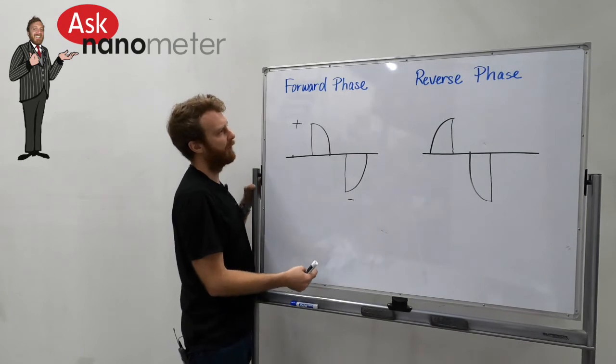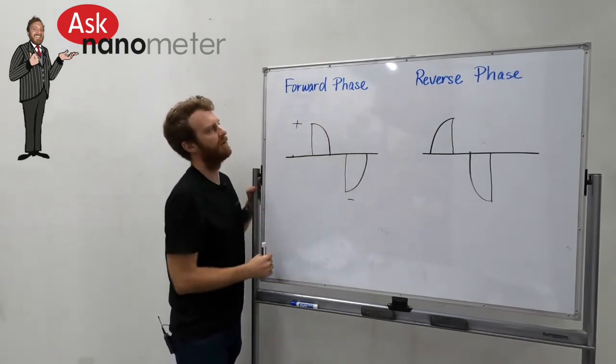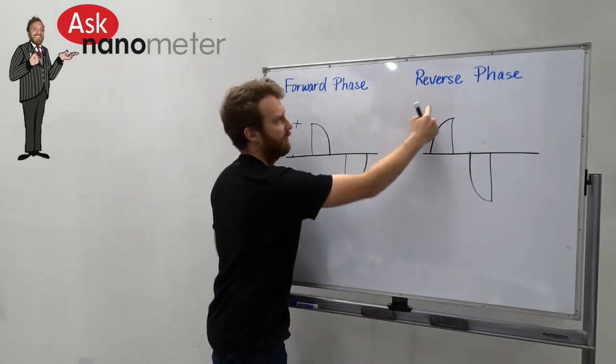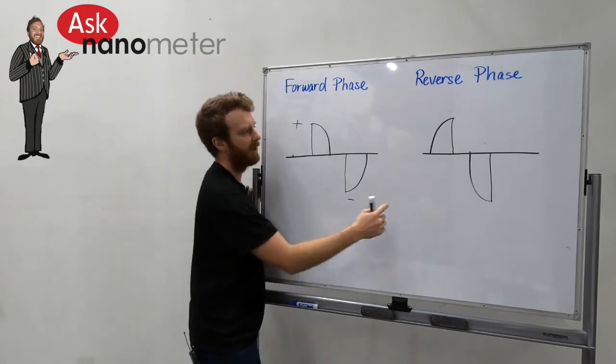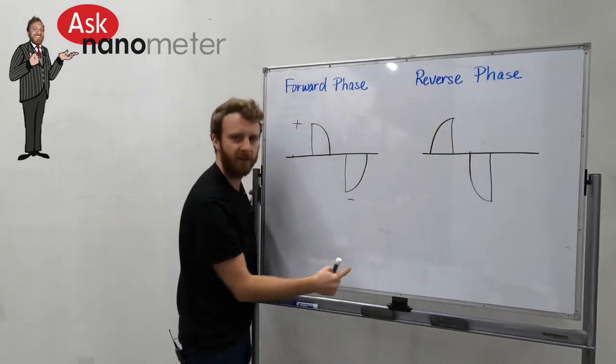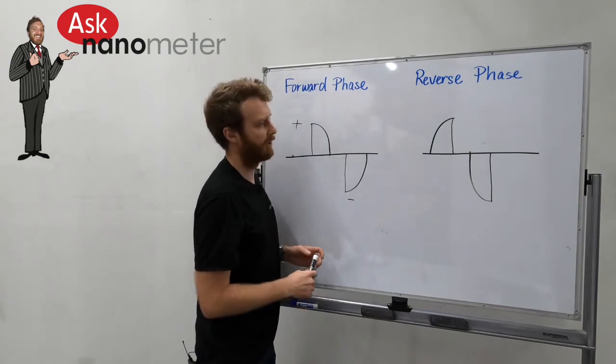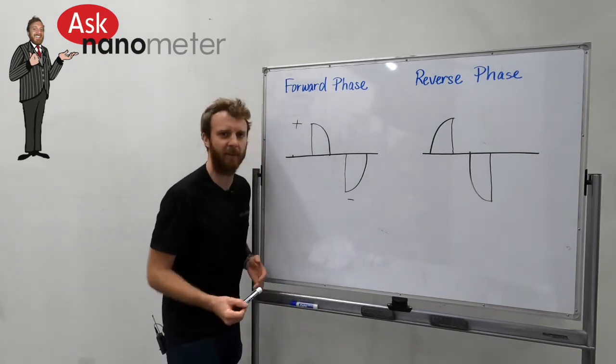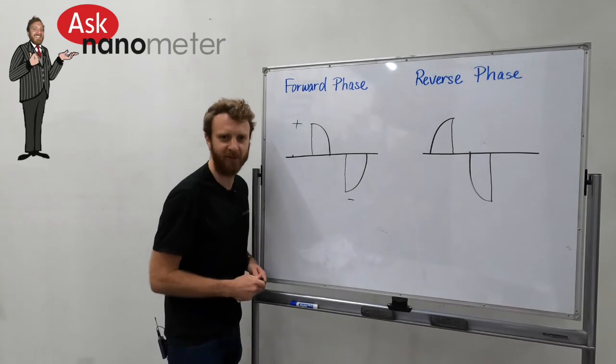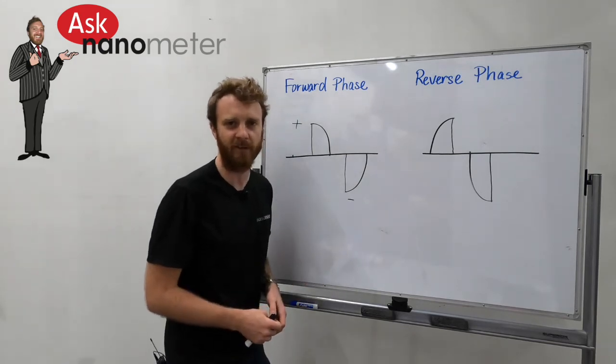On the flip side, if we were to take a forward phase driver and attach it to a reverse phase dimmer, because we're interrupting the power on the trailing edge, you're going to end up getting large kickback voltages on the load side and ultimately over time it's going to blow it up.